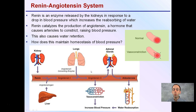If blood pressure gets too low, what's something that the body could do? If it gets too high, what's something — in contrast to what we saw before — where we can reduce our blood pressure? Because we want to maintain that homeostasis.